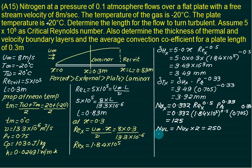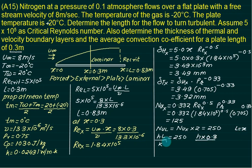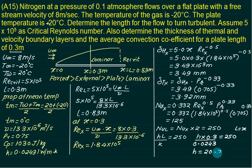For laminar flow, the average Nusselt number is always twice the local: Nu_avg = 2 × 125 = 250. Since Nu = h × L / k, with L = 0.3 m (not 0.83 m, since we need results only for 0.3 m) and k = 0.0243 W/mK, we solve for h. The average heat transfer coefficient h = 20.24 W/m²·K. Remember: always use L = 0.3 here, not 0.83.